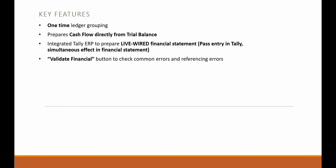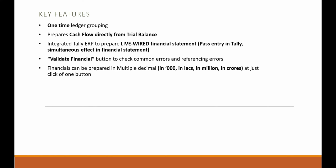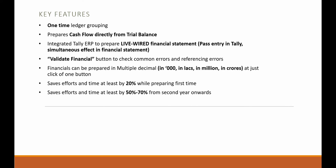There is a Validate Financials button to check for common referencing and errors. Financials can be prepared in any multiples you want. You are going to save 20% of time from the first year onwards and 50 to 70% of time from the second year or second time onwards. You don't need to perform any manual casting every time — whatever difference is there, it is going to pop up.